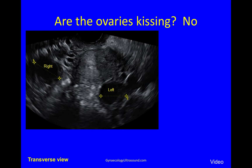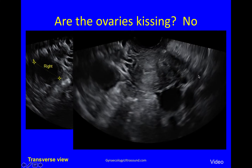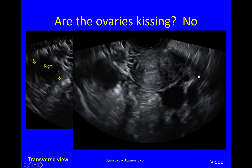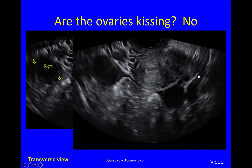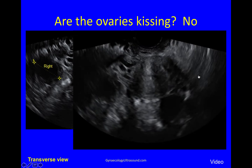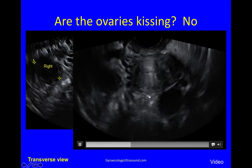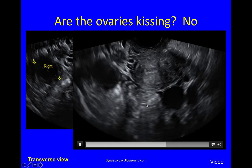Are the ovaries kissing though? This is really good to look at in the transverse plane, just above the torus — right ovary here, left ovary here — and then you can very gently do the sliding sign. You can do the sliding sign in lots of different areas in the pelvis, and here you can see that both ovaries have some adhesions but they're not kissing.